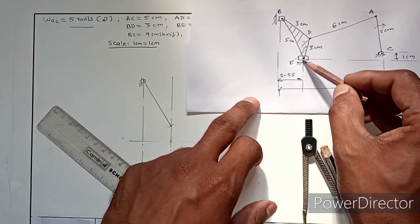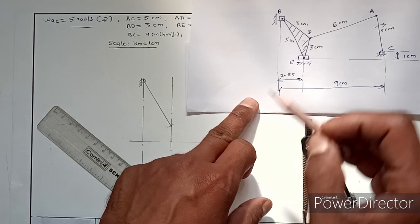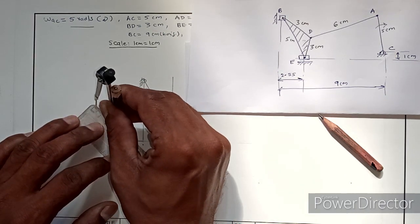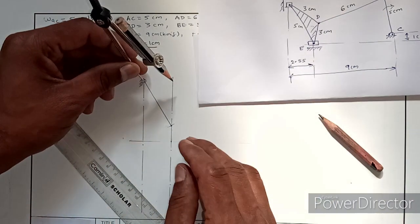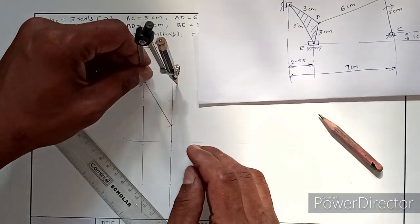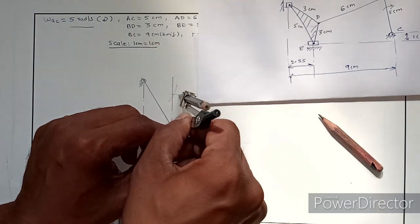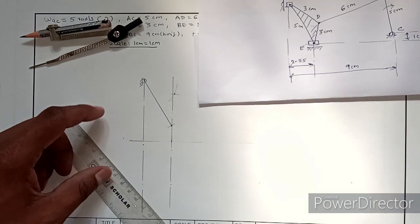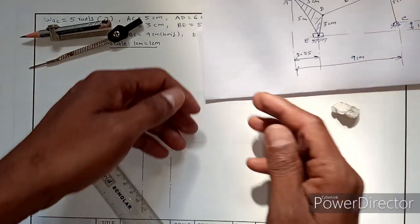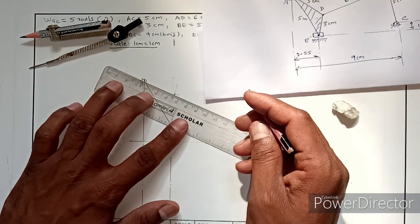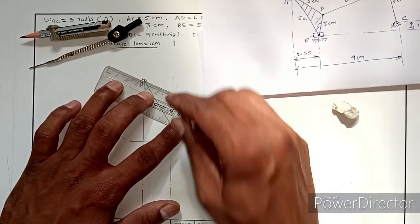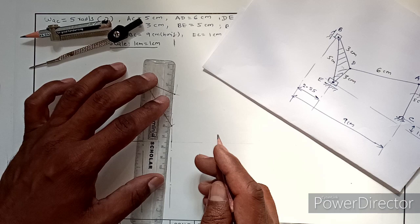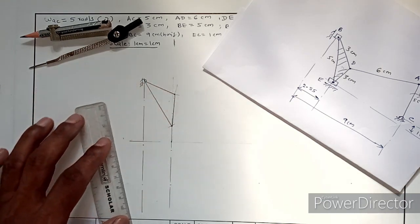Now BD is 3 centimeters and ED is also 3 centimeters. Taking a distance of 3 centimeters in the compass, I locate point D using the intersection of arcs from B and E. I join B to D and D to E, completing the ternary link BDE.